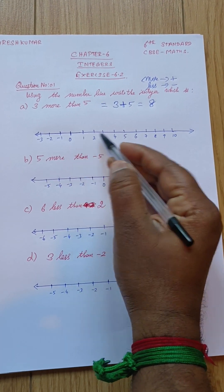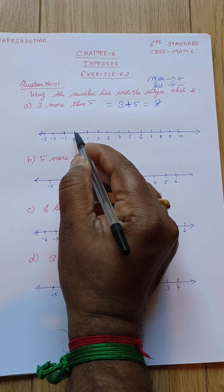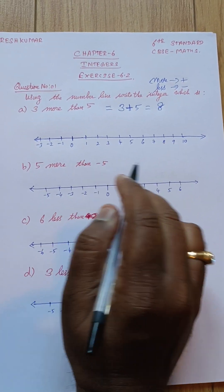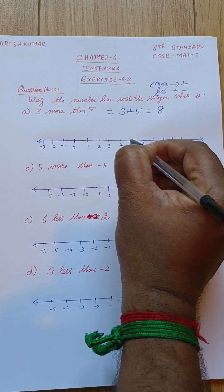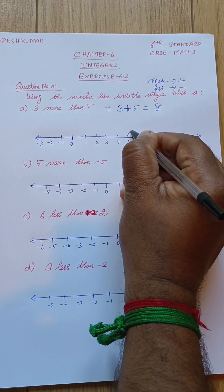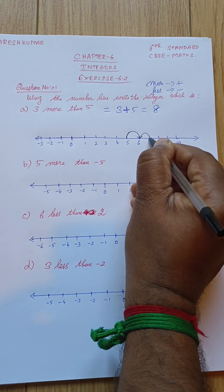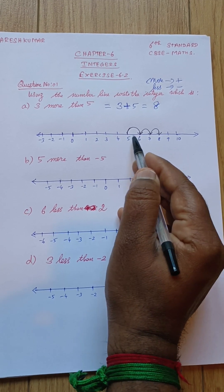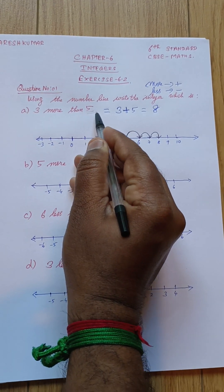Now how are we going to mark the number line? On the number line, the left side is minus and the right side is plus. Three more than five means five plus three equals eight. So from five we go: five to six, six to seven, seven to eight. This is how we define this number, because they mentioned three more than five.